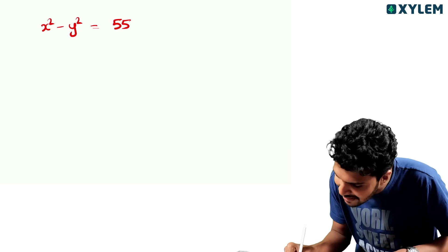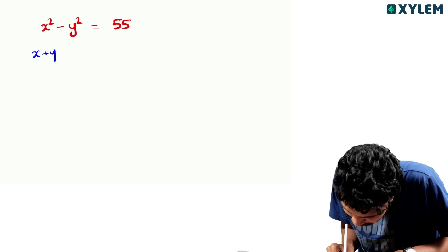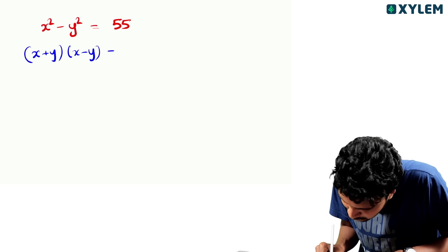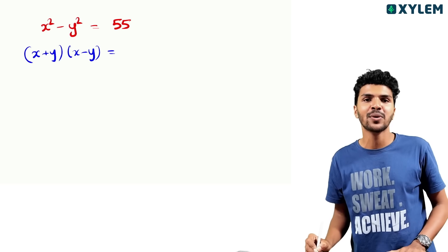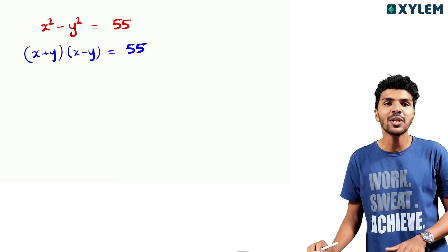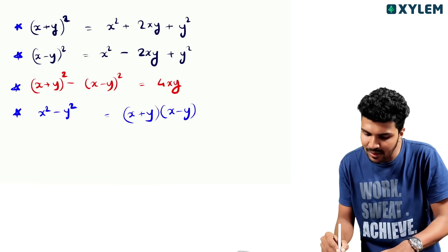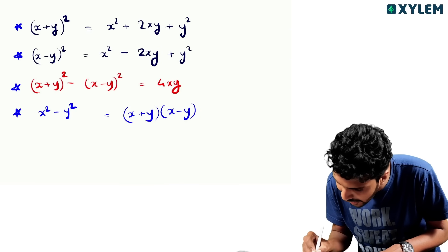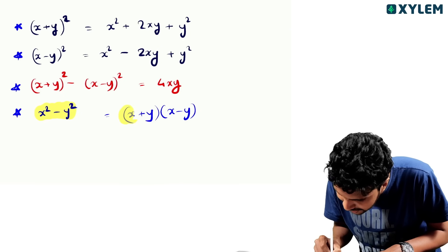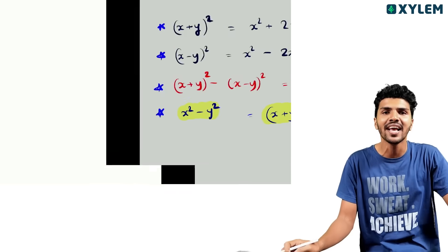We can write: x plus y into x minus y is equal to 95. So x square minus y square is equal to 95, which equals x plus y into x minus y.